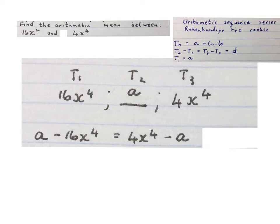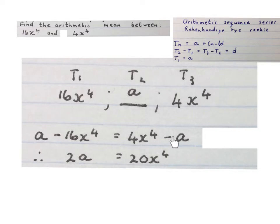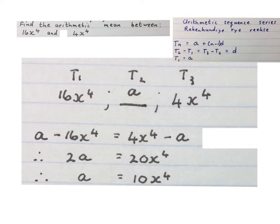Now we solve for A. You plus A on both sides to get this minus A to this side, and you plus 16x to the power of 4 on both sides to get him to this side. You end up with 2A equals 20x to the power of 4. You divide by 2 to get the A alone and you get A is 10x to the power of 4.